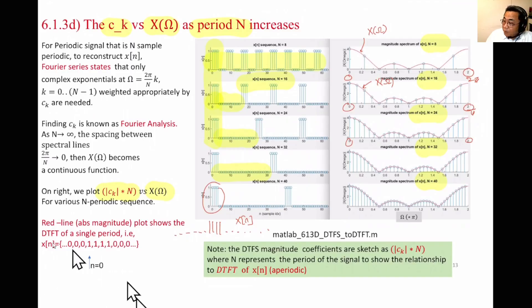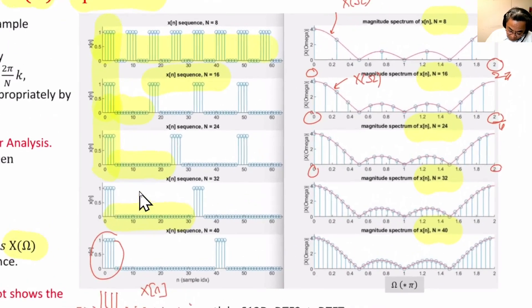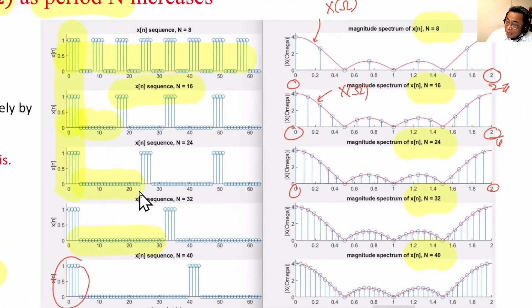So we are plotting N times Ck. And if you notice, when we plot N times Ck, we are plotting all these blue lines over here. And for k equals to 8, you'll notice that there are 8 lines.